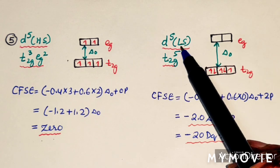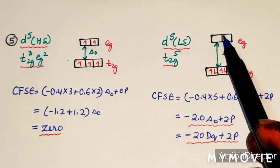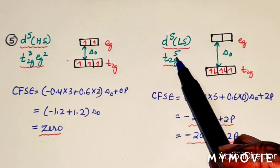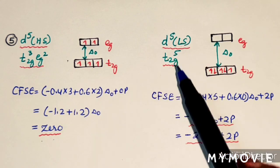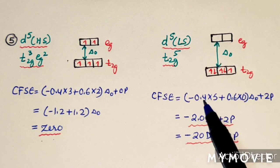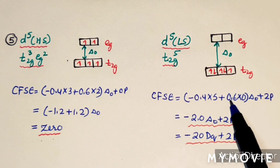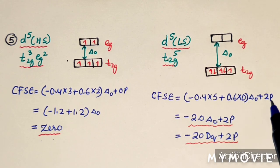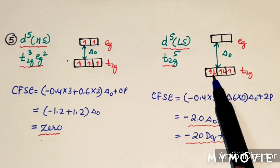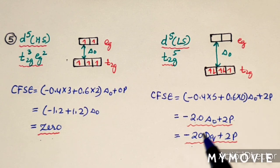For D5 low spin complex, all 5 electrons go into T2G giving configuration T2G5. CFSE = 5×(−0.4) × delta O + 2P = −2.0 delta O + 2P, or −20 DQ + 2P. There are two paired electrons contributing to the pairing energy term.